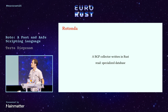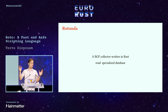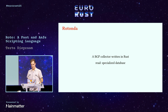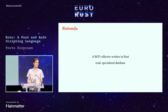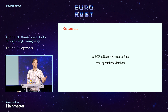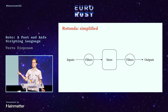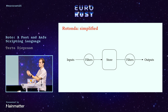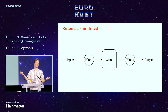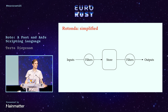Rotunda is a BGP collector written in Rust. All you need to know about it is it's a highly specialized, super fast database for one specific kind of data that my colleagues spend a lot of time highly optimizing. We want people to be able to deploy this database and then customize what is being stored inside and what comes out when you query it.